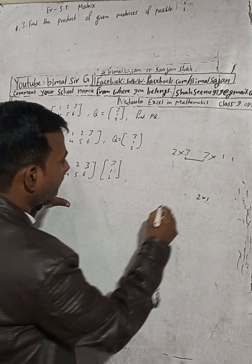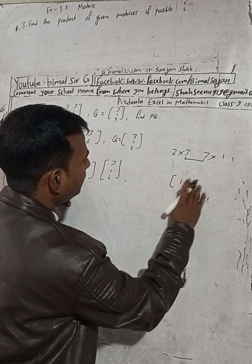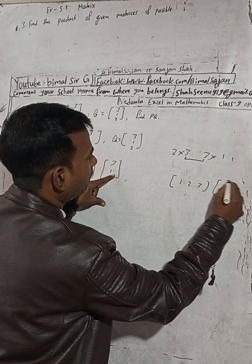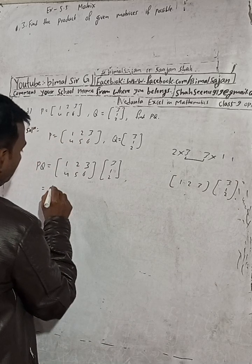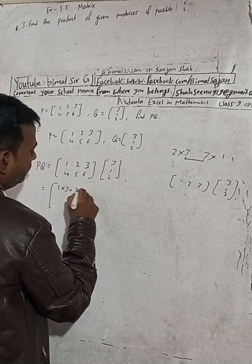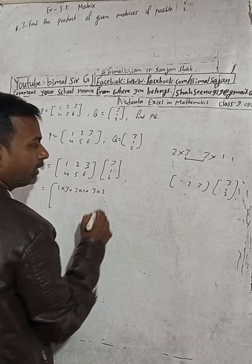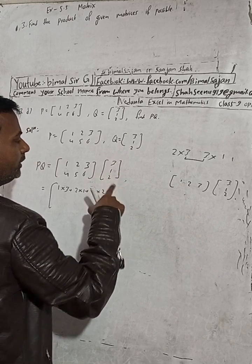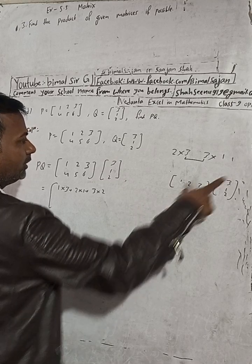Now for the first row of the result, we take the first row of P — that's 1, 2, 3 — and multiply by Q's column. So: one into three, plus two into one, plus three into two. There is only a single column in Q, so no other columns to consider.